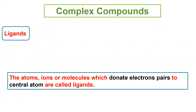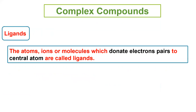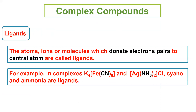Ligands: The atoms, ions, aur molecules which donate electron pair to central atom, are called ligands. Ligands electron pair donate karte hai aur metal ke saath coordinate covalent bond banate hai. Jaise ke K4Fe(CN)6 mein CN (cyanide) ligand hai, isnei electron pair donate kiya hai iron ko.